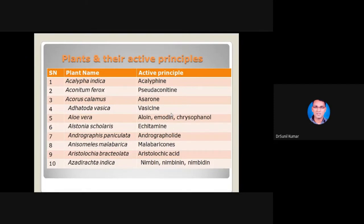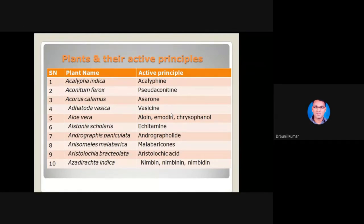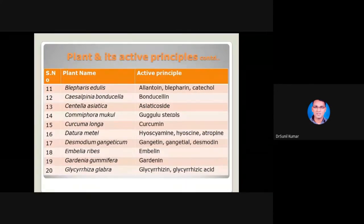Drugs containing volatile oil may have hundreds of compounds together. Out of them, not all are called active principles — some will be active and some will not give any action. Some compounds help avoid side effects caused by high-concentration molecules, acting synergistically. Other well-known active molecules include curcumin from Curcuma longa, hyoscyamine, atropine, embelin, gardenin, glycyrrhizin, and glycyrrhizic acid. Some of these are even available as allopathic drugs in isolated form. When taking an isolated compound as a drug, be careful because there will be side effects, just like an allopathic drug. But whole plant powder or whole plant extract as Kashayam or Arishtam will have fewer side effects.